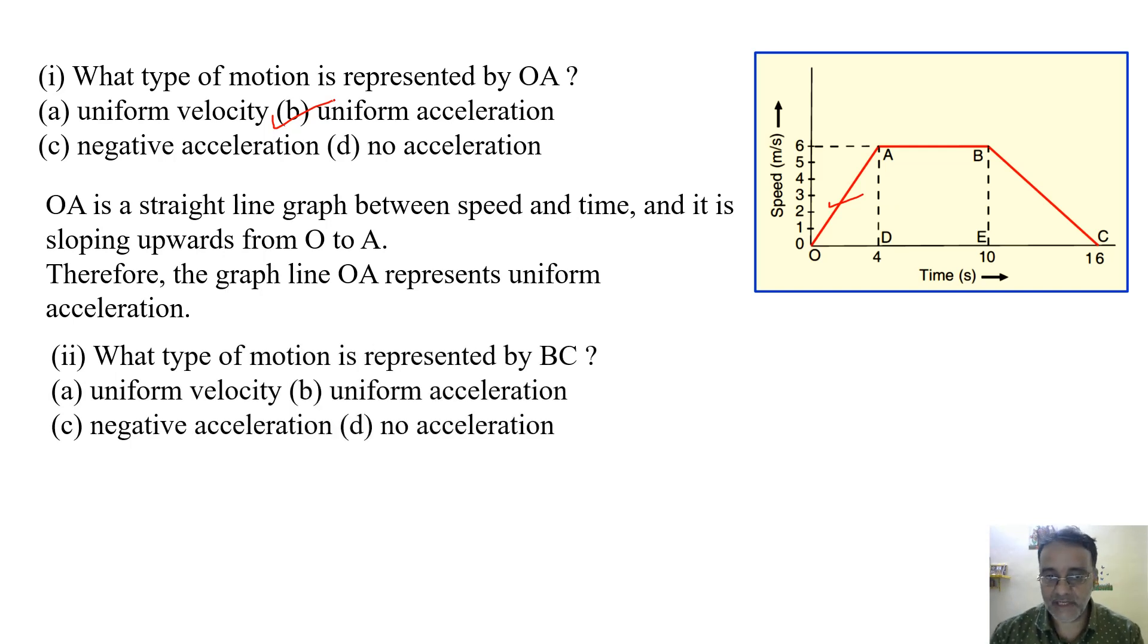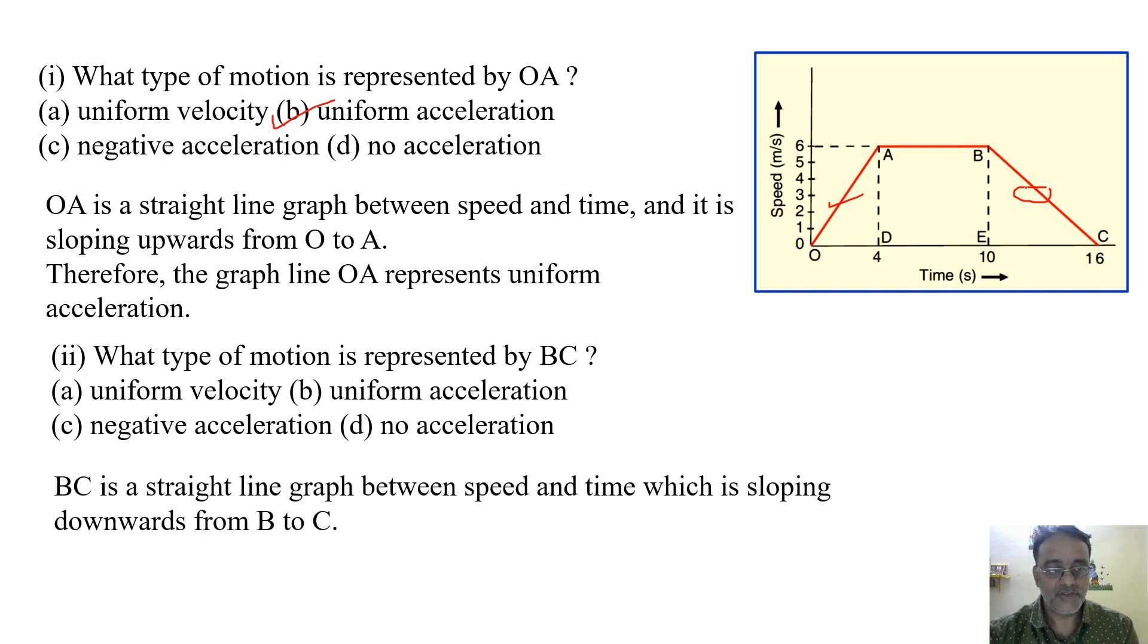Now the second question. What type of motion is represented by BC? Aur yaha pe slope jo hai, wo downward ki taraf chala gaya. So retardation ho raha hai. That means acceleration jo milega, negative milega. So the correct option is C.